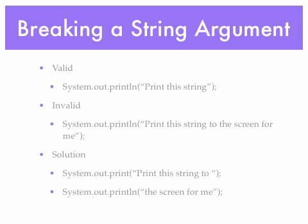When you use either print or println and you pass a string, don't make the mistake of breaking the argument — the string passed — within the quotation marks. This will result in a compiler error. For example, system.out.println with argument 'print this string' is valid. But if you press the return key mid-string — breaking it within the quotation marks — you'll get a compiler error.